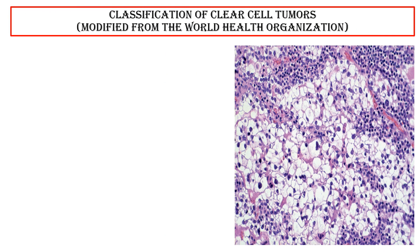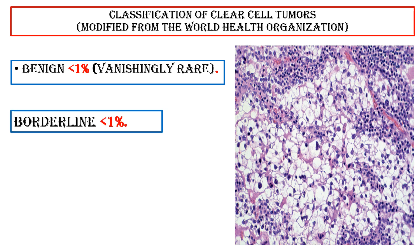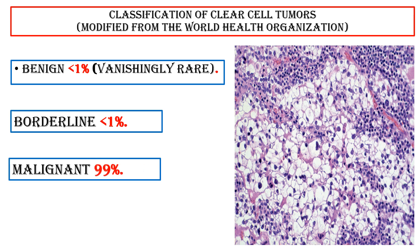Classification of clear cell tumors, modified from WHO: benign less than 1% — vanishingly rare; borderline less than 1%; malignant 99%.